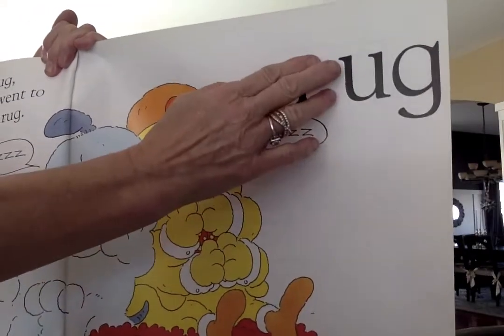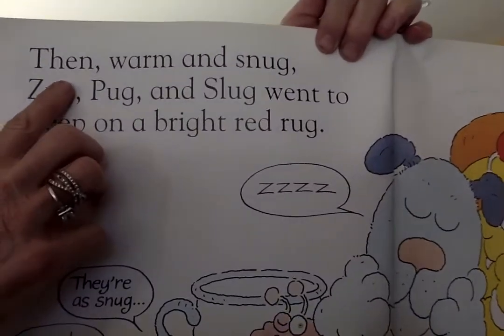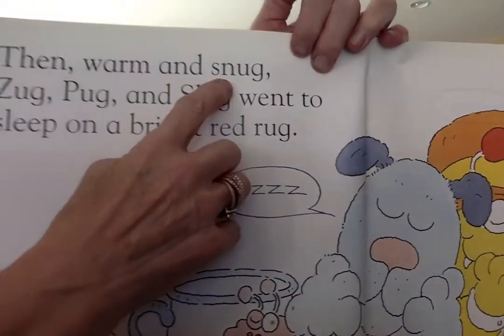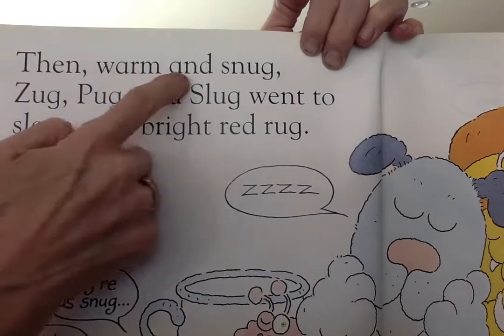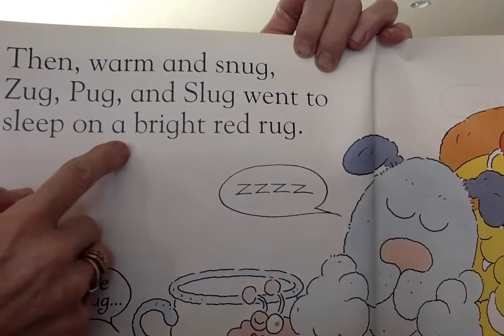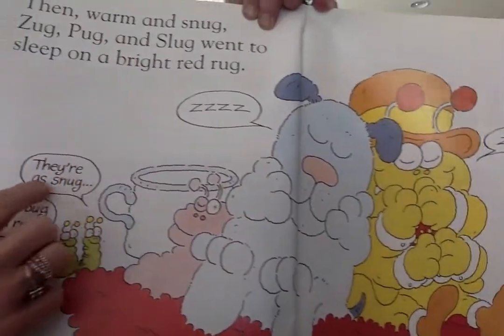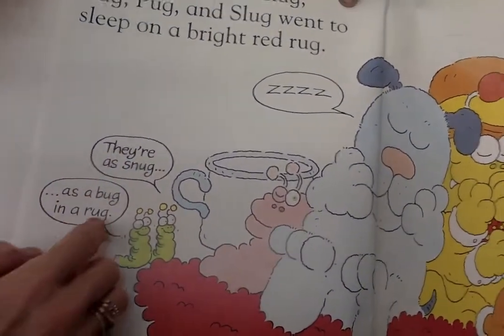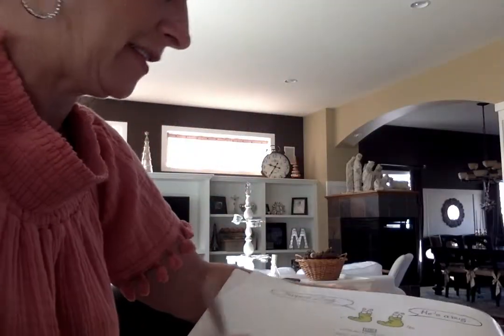If I know UGG, I know rug. Very good. Read with me — let's look at it first. Looks like they're on a rug. Then, warm and snug — Zug, Pug, and slug went to sleep on a bright red rug. Zzz. They're so snug as a bug in a rug. Time for bed, isn't it? They seem pretty happy. They're all asleep, even the slug.